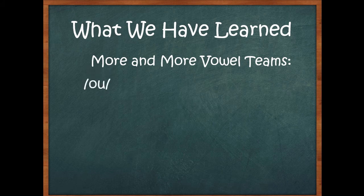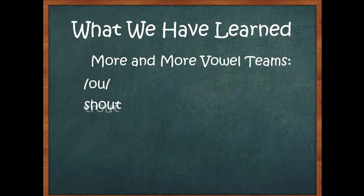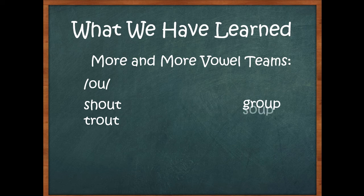And we learned even more vowel teams. We learned the OU vowel team, which can be owl, like shout and trout. But it can also be oo, like group and soup. Oh, that's tricky.